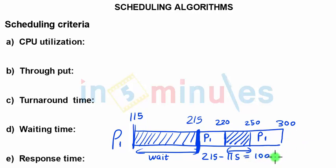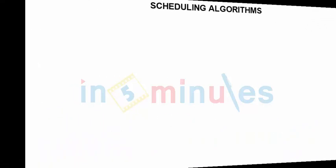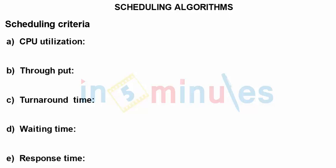So, for process 1, response time was 100 units. As we have studied all five major criteria, that is CPU utilization which we intend to make 100%, throughput which we try to maximize.